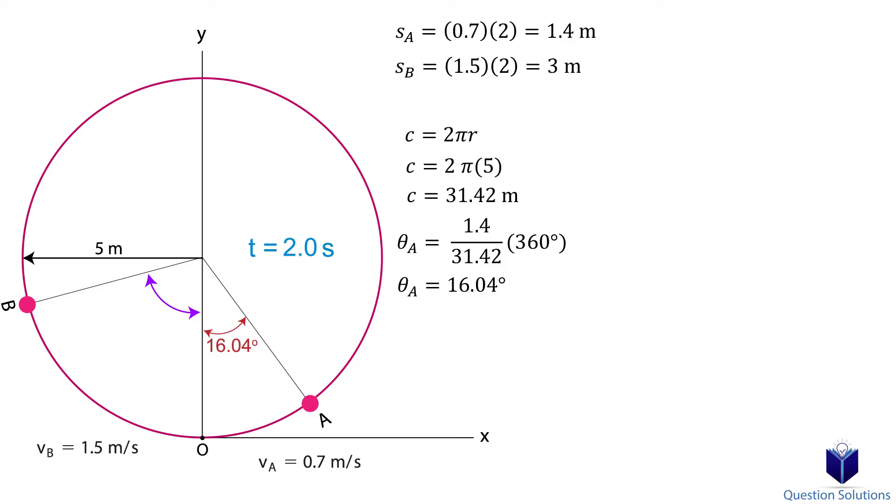The same process applies for particle B. 3 divided by 31.42 multiplied by 360 degrees, which gives us 34.37 degrees.